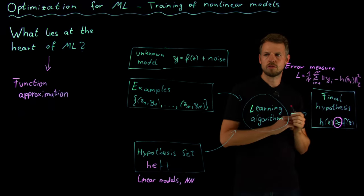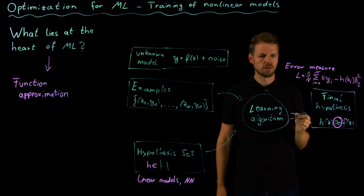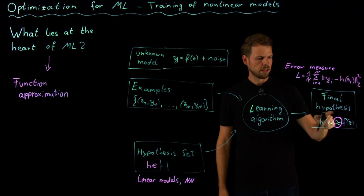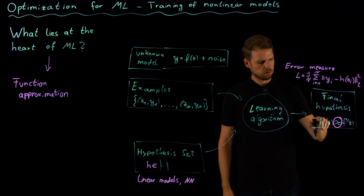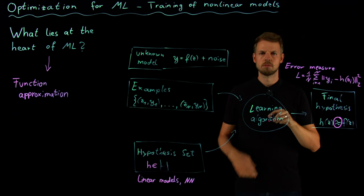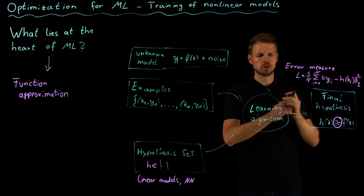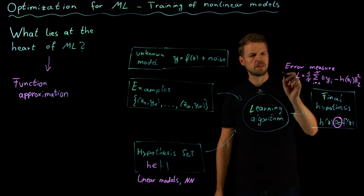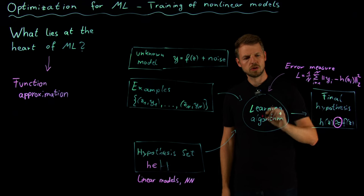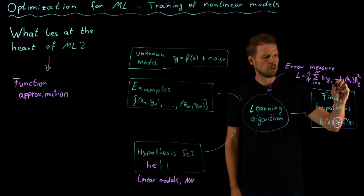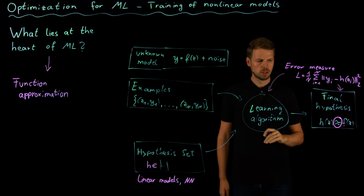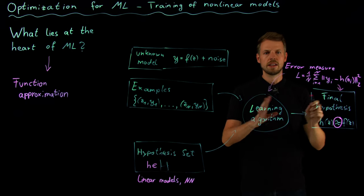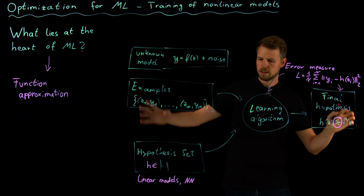We take for instance the squared loss function—a very common thing. You can define other error measures, but now let's go for simplicity with this quadratic loss function. Then we see if we have approximately the same relation, then this loss function should become small. This error measure goes into the learning algorithm, but it also obviously goes in here to determine which is a good final hypothesis.